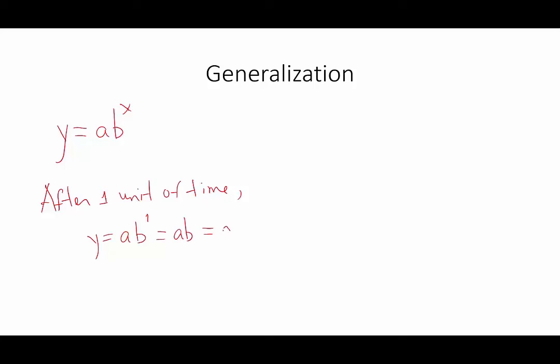the final population will be a, will be a plus, plus whatever you had at the beginning, times the growth or decay factor, which we are calling p. We factor out the a, we see that this is just 1 plus p.